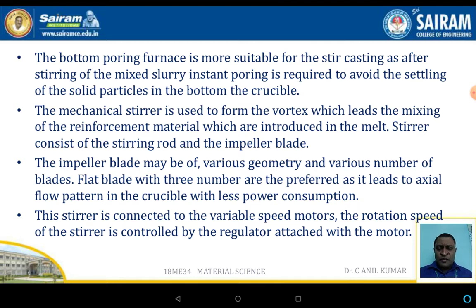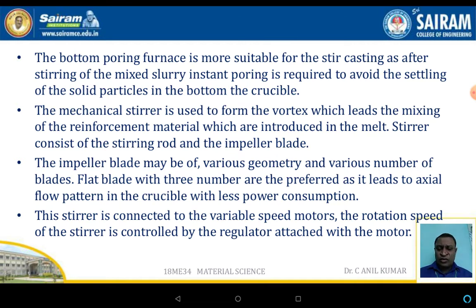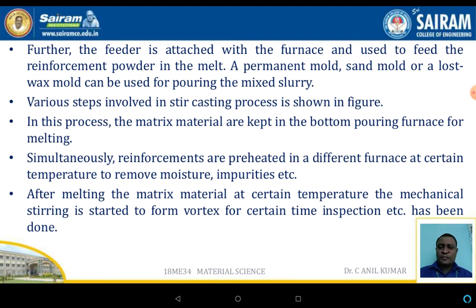Flat blades with three in number are preferred as they lead to an axial force pattern in the crucible with lesser power consumption. The stirrer consists of a variable speed motor, and the rotation speed is controlled by a regulator attached to the motor.